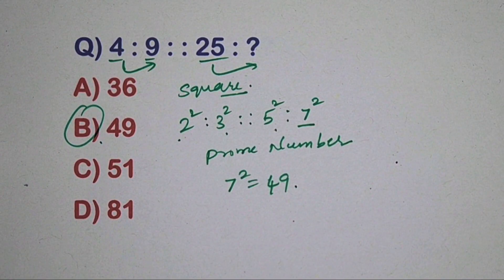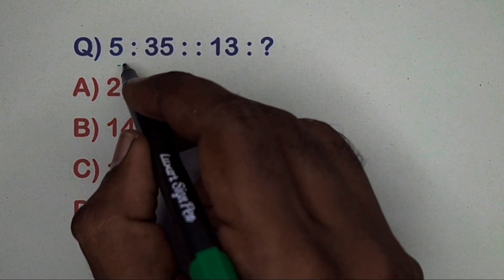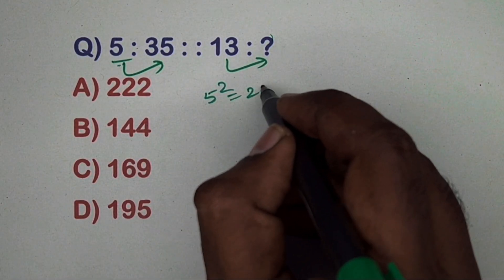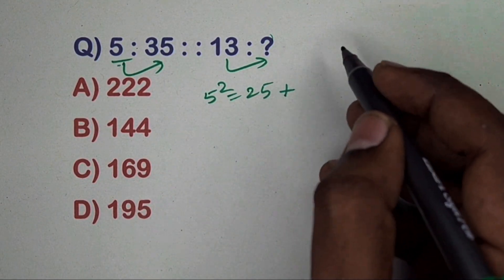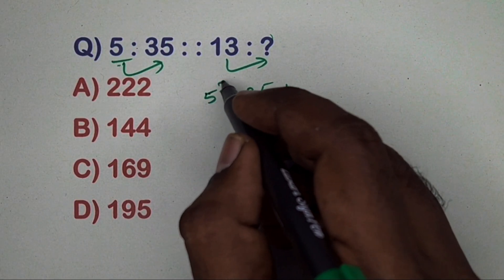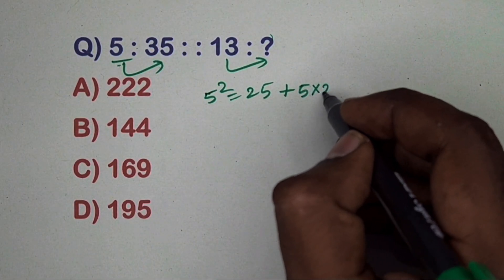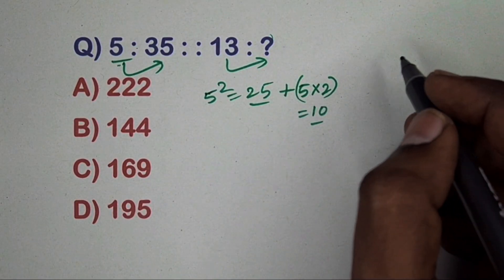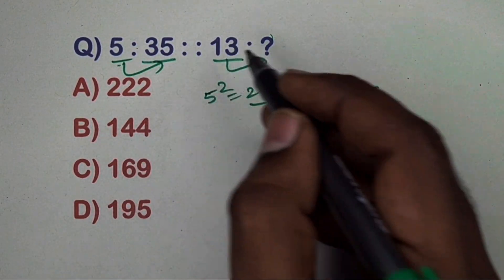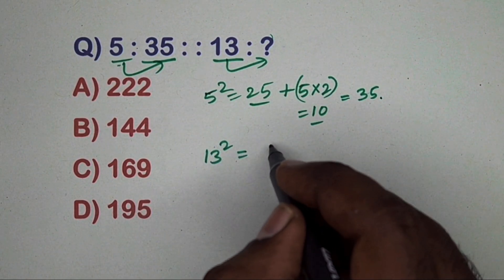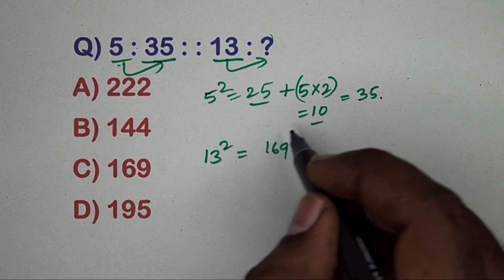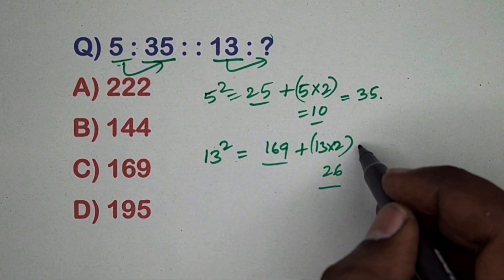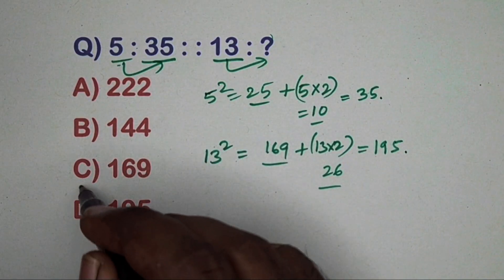Next question: 4 related to 35, 13 related to which number? Take 5 — 5 squared equals 25, plus base times power: 5 times 2 equals 10, so 25 plus 10 equals 35. Same way, take 13 — 13 squared equals 169, plus 13 times 2 equals 26, so 169 plus 26 equals 195. Option D is the correct answer.